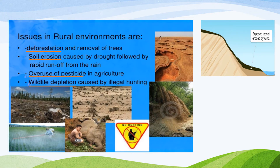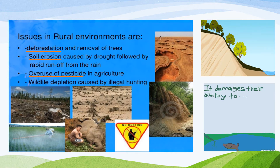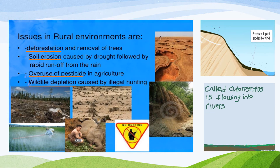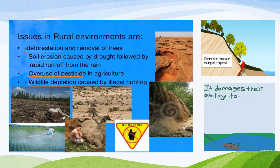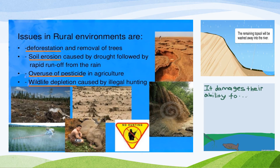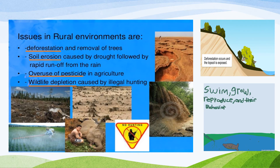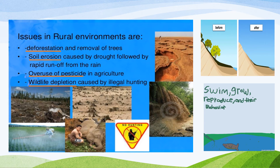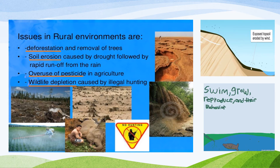What else? You can see people overuse pesticide. The pesticide they use from their plants will flow to the river and will affect the fish and other water animals. We also have illegal hunting, which causes wildlife depletion.